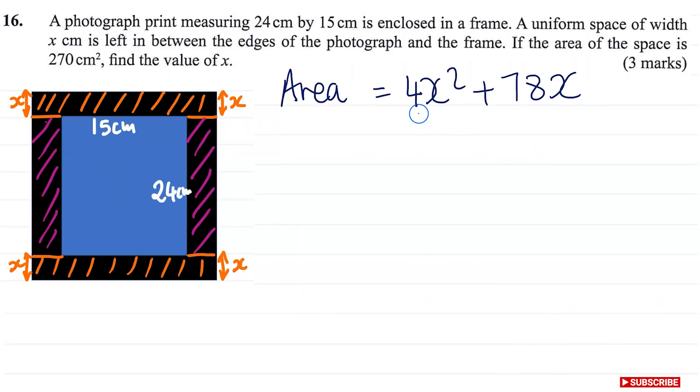So now this is what we have. And we're going to form an equation. Because we're told this area, this border area is 270. So in terms of algebra, this is what we have. We're now going to equate the two. So we have 4x² plus 78x. This is going to be equal to 270.